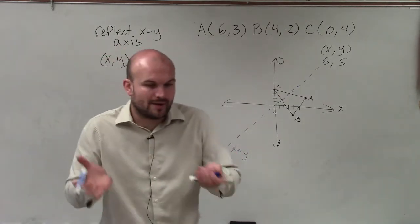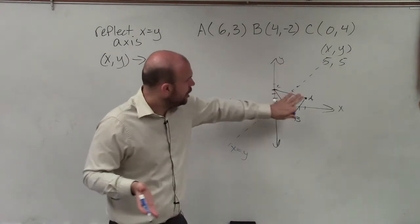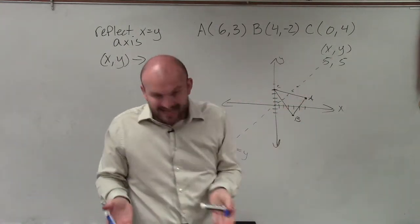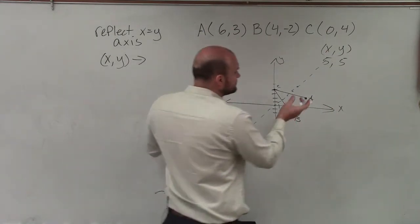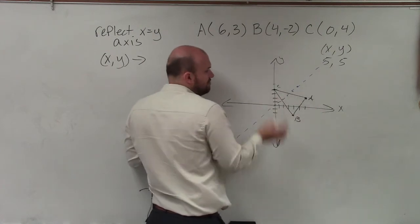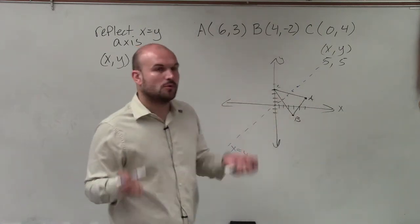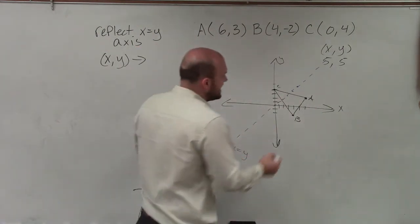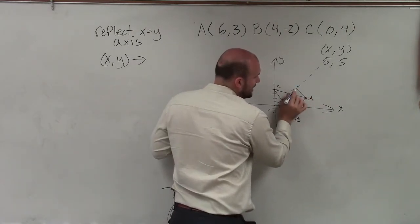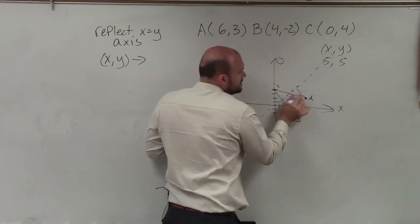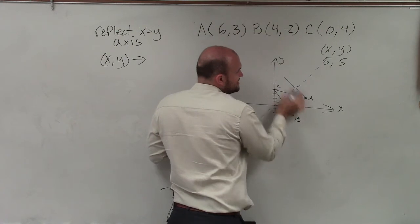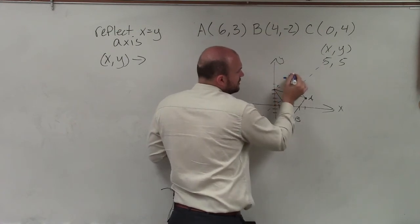So what I want to do is I want to reflect, again, this figure over this line. And again, it becomes difficult because, one, this is like a diagonal line, right? And we have coordinates that are on the right of that line or below it and as well as above it. But remember, all we're doing when we're looking into a reflection is taking the distance from our point to our line of reflection and just reflecting that over.